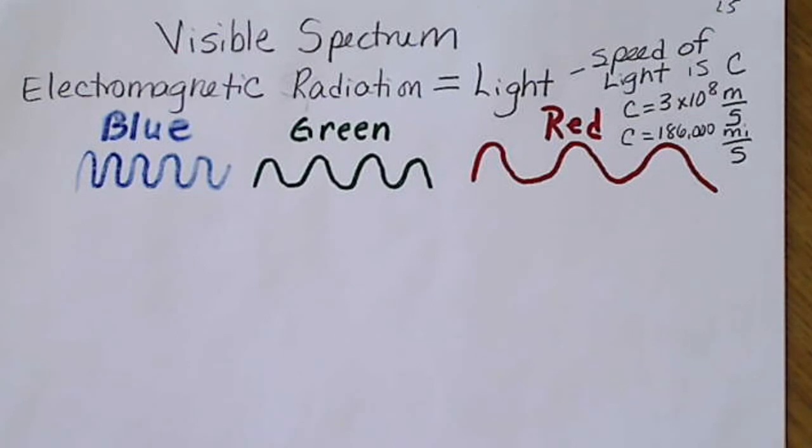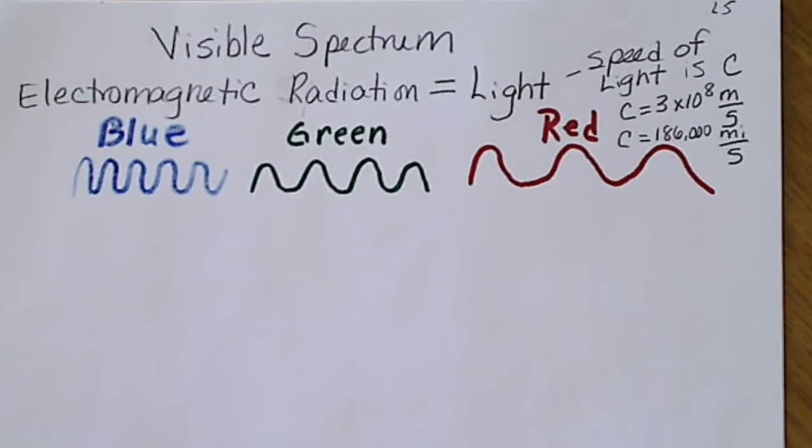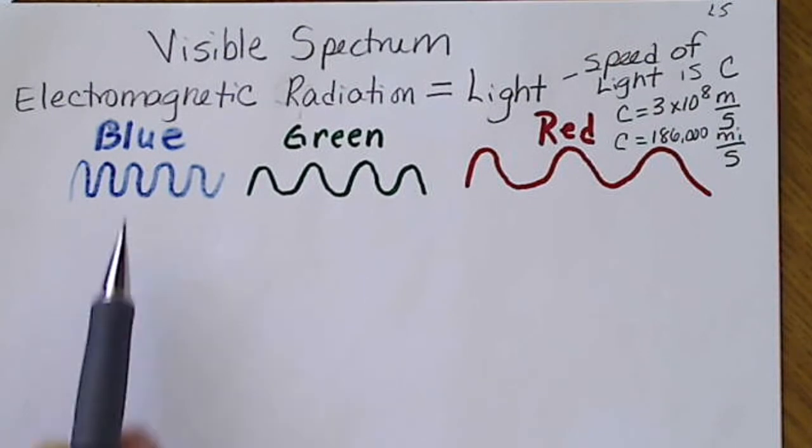Light is a type of energy which has no mass and travels quickly. In fact, nothing travels faster than the speed of light.